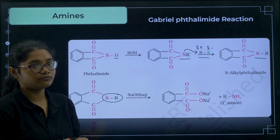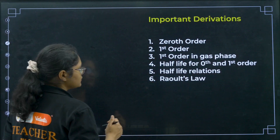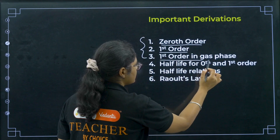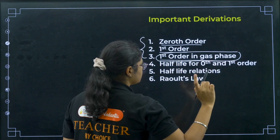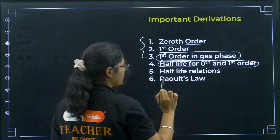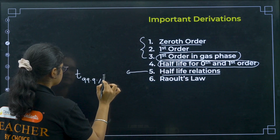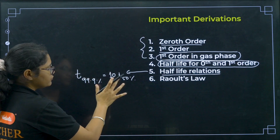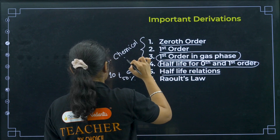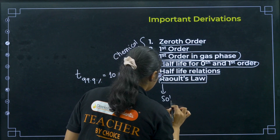Those were the important mechanisms from the four organic chapters. Now for the list of important derivations: from chemical kinetics, focus on three — zeroth order integrated rate equation, first order integrated rate equation, and first order in gaseous phase. This is a trending exam question so prepare it thoroughly from your NCERT book. Also prepare half-life for zeroth and first order reactions, and the relation T₉₉.₉% = 10 × T₅₀%.